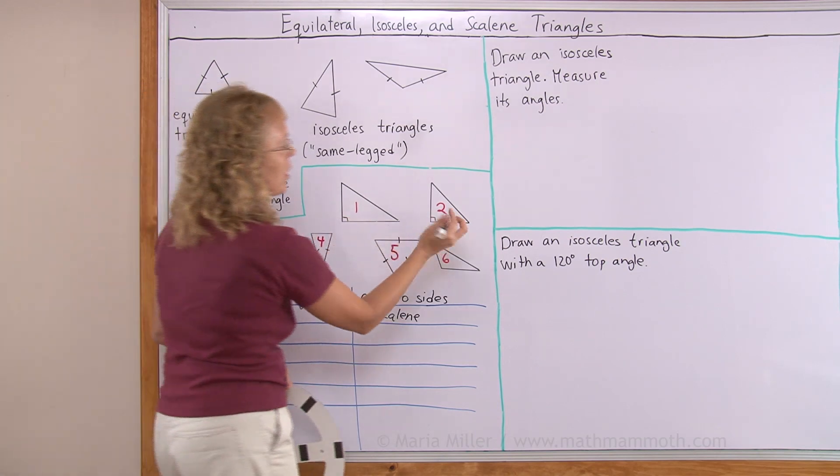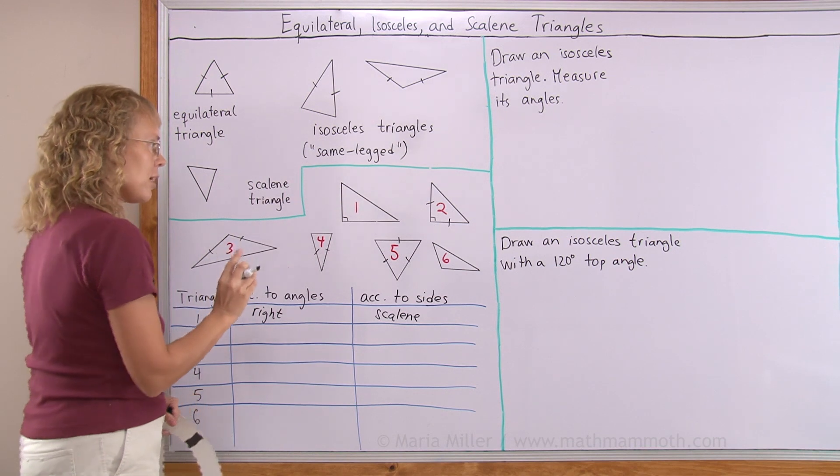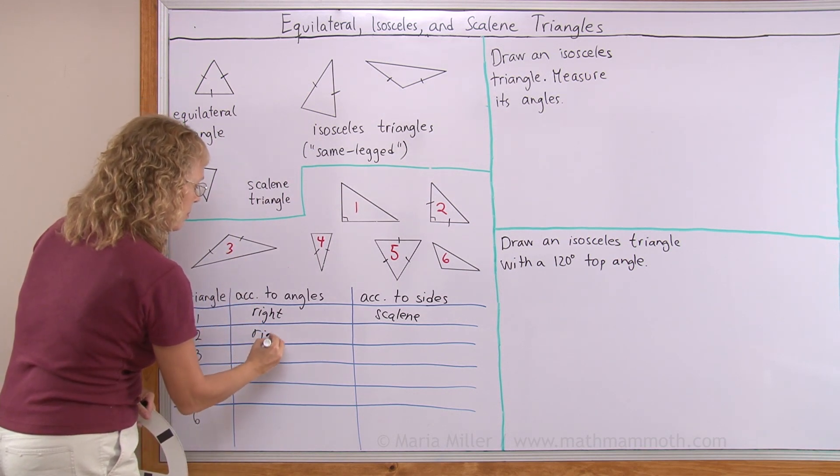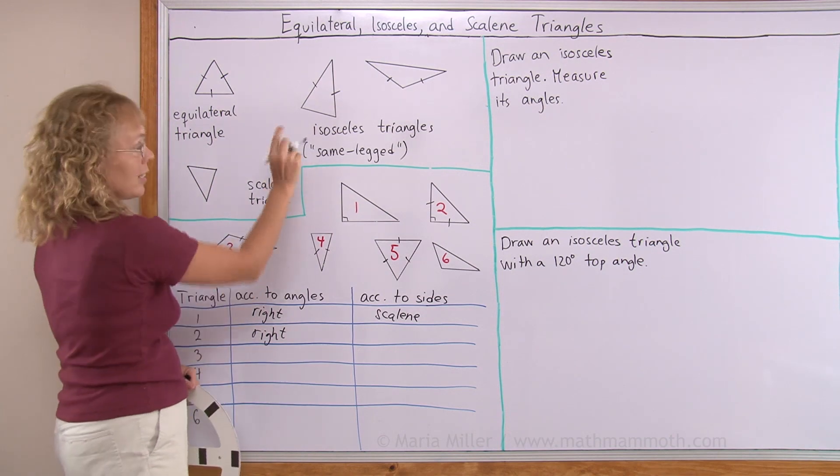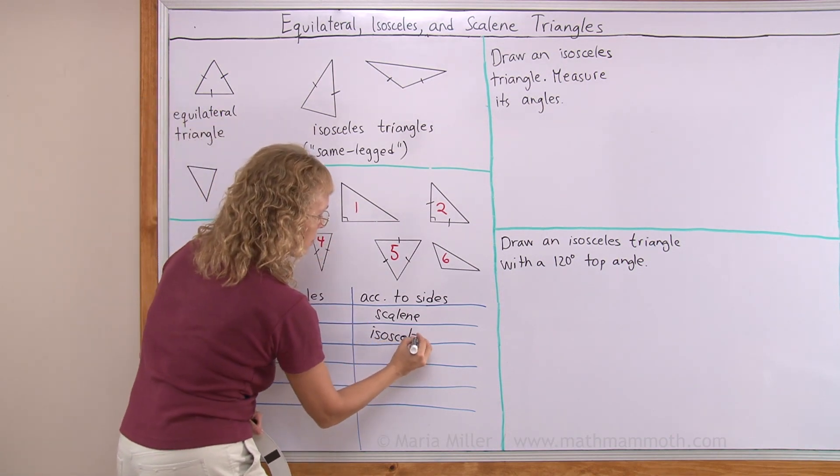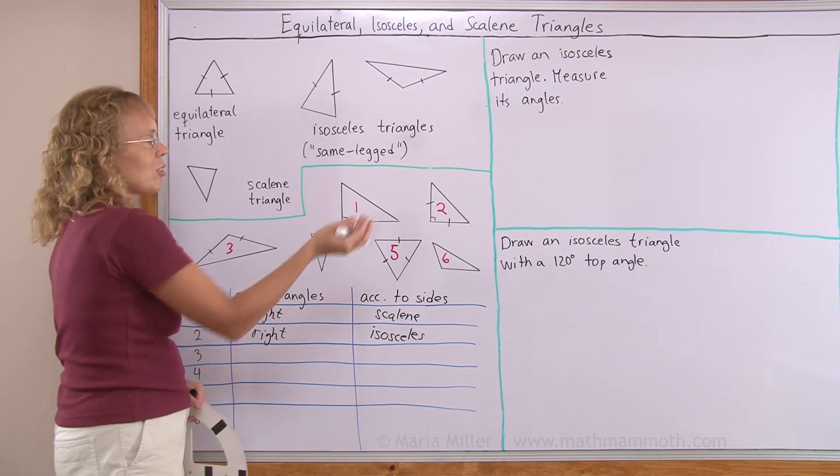Then number two. I forgot to mark them. These two sides are congruent. So this time we have a right triangle. But since its two sides are congruent, it is isosceles. An isosceles right triangle or a right isosceles triangle.